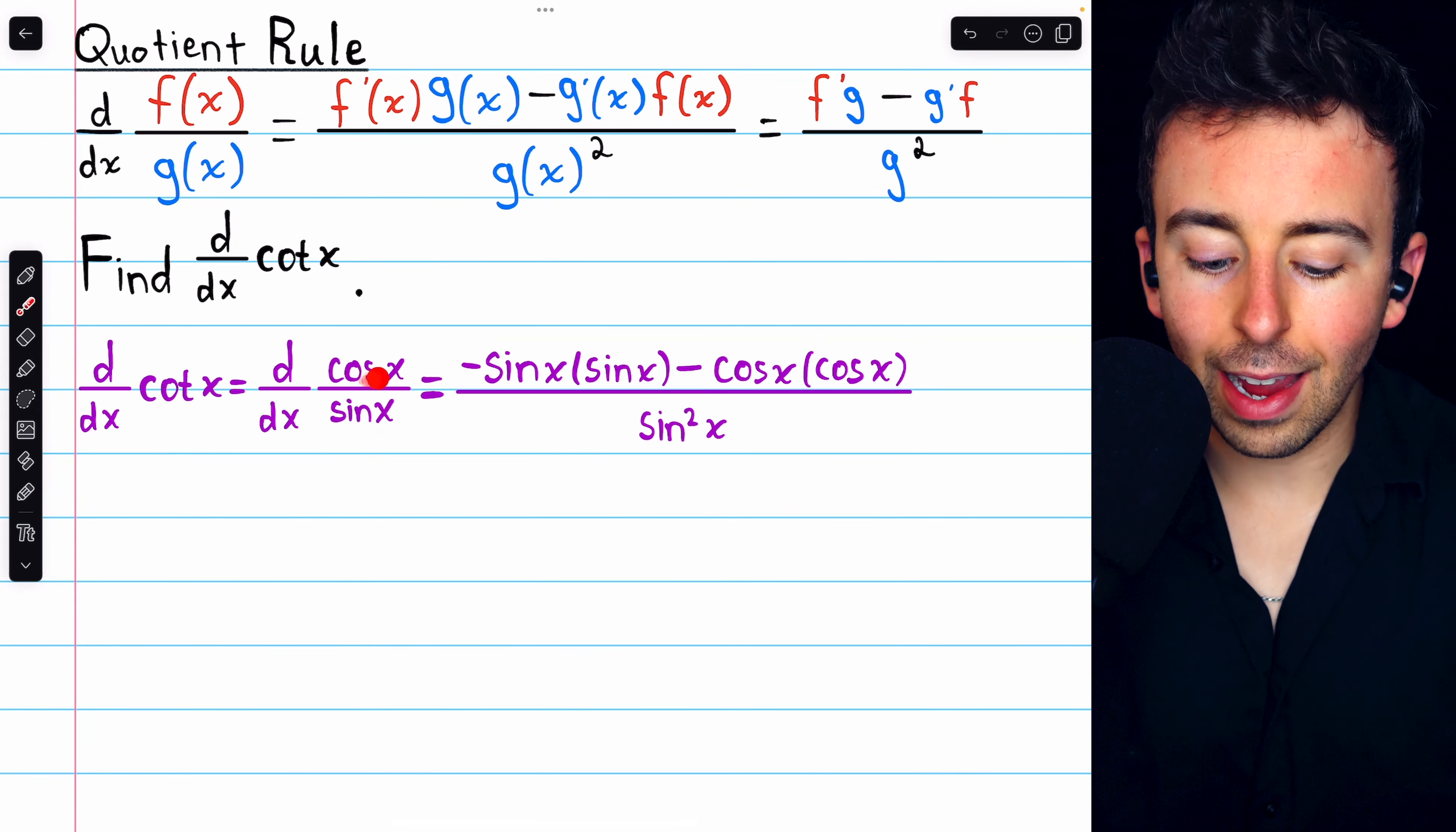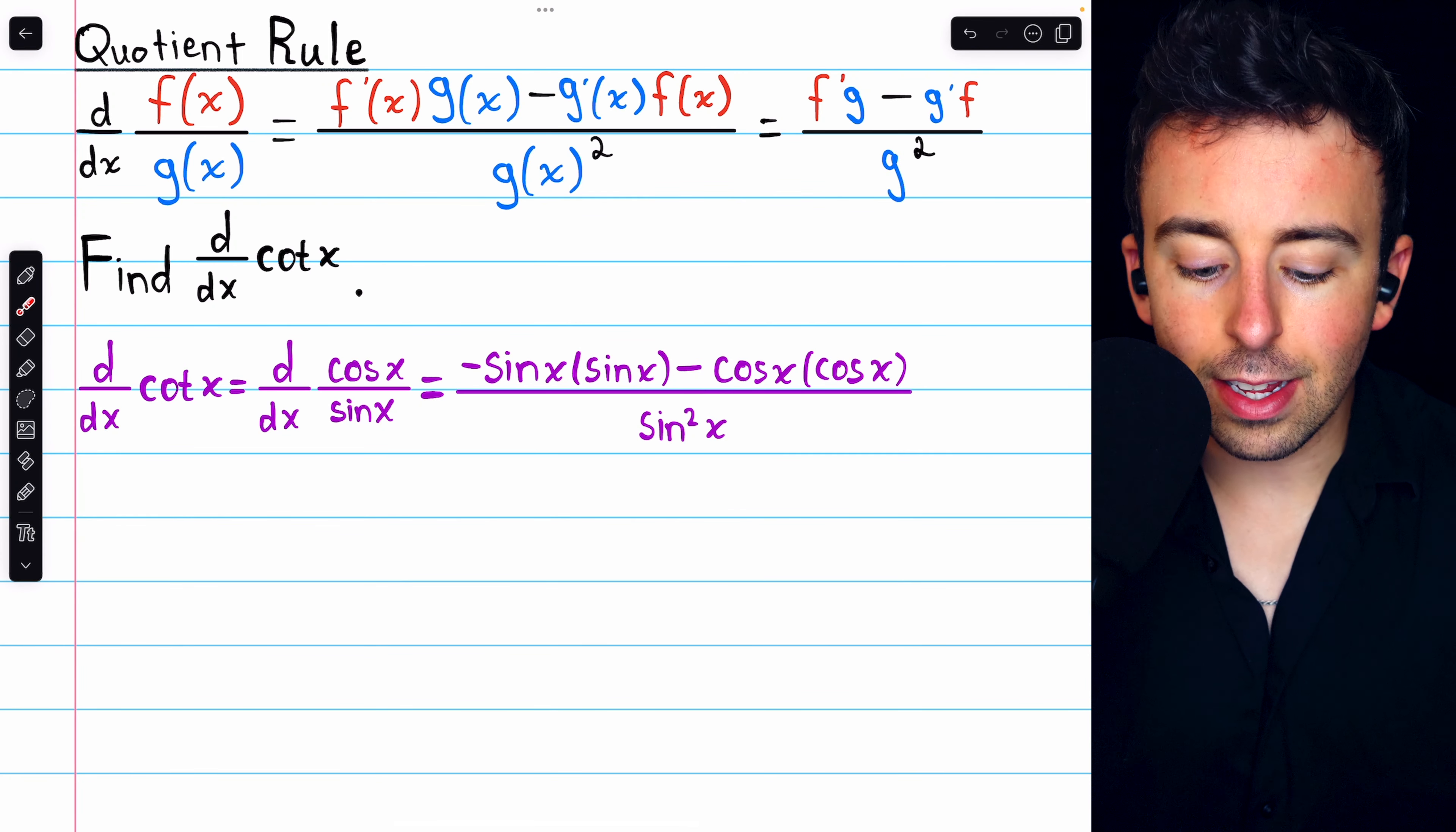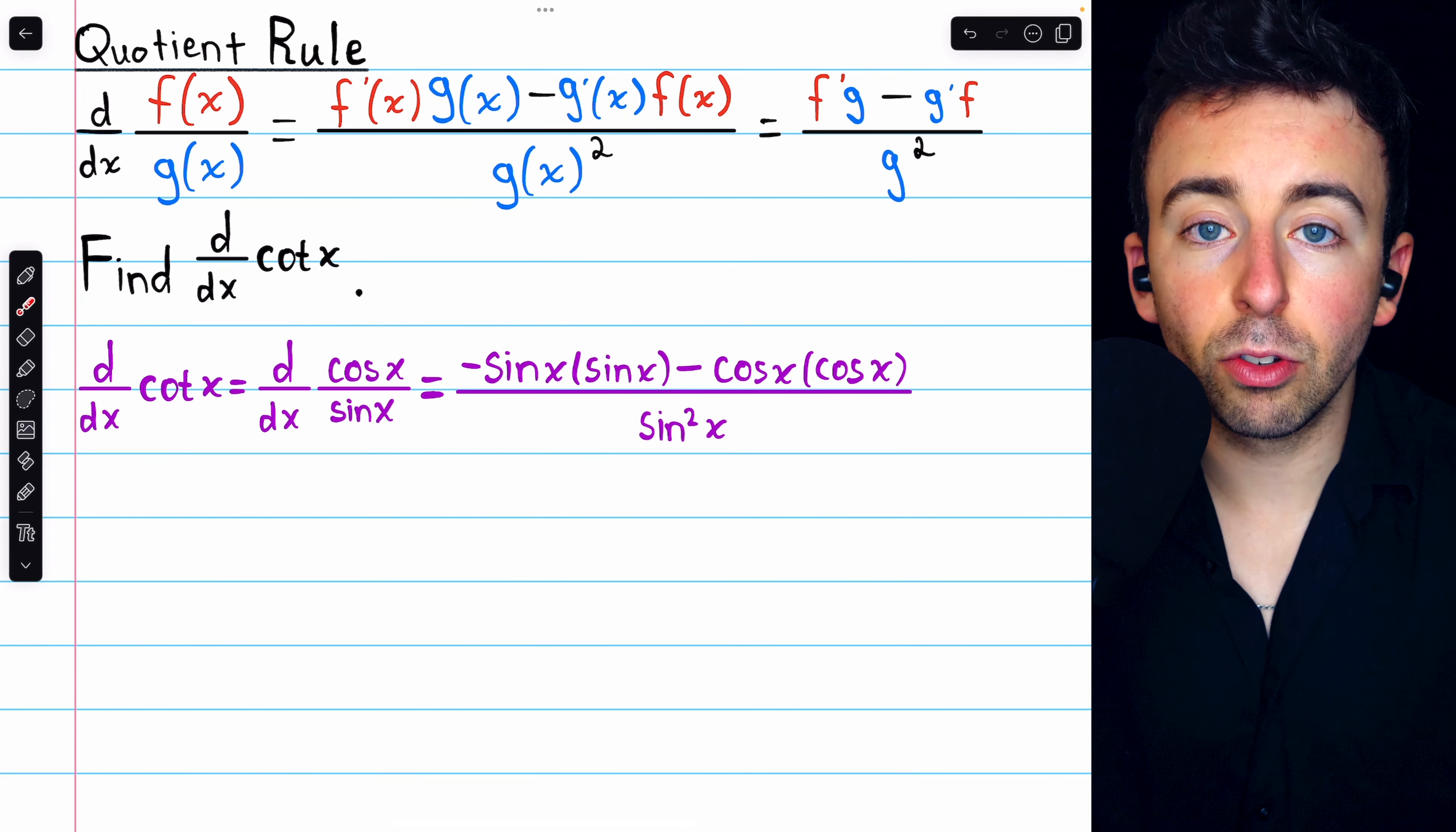f is cosine x, so f prime is negative sine x. And then we multiply that by g, which is just sine x. Then we subtract g prime f. g is sine x, so g prime is cosine x. And then we multiply that by f, which is cosine x. All of this is divided by g squared, so that's sine squared x.